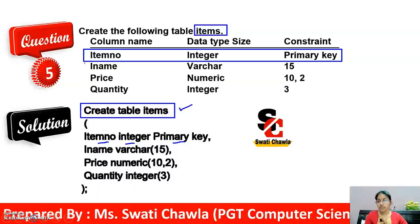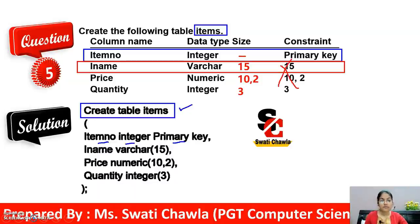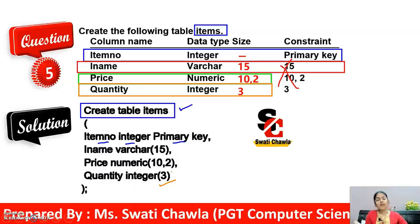After item_name, the next column is price with data type NUMERIC and size 10,2. Then quantity with data type INTEGER and size 3. Everything is available — column names, data types, sizes, and the constraint which is primary key. So you just need to substitute the values into the correct syntax. Close the bracket and add a semicolon at the end.